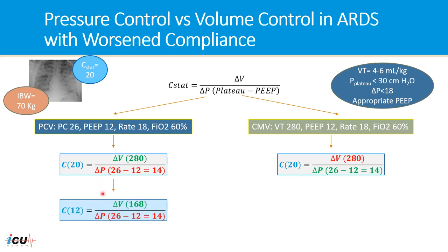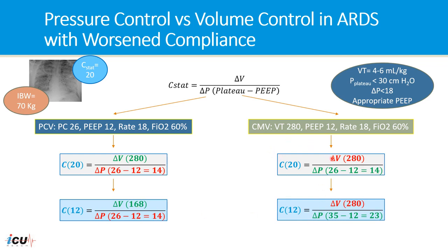In the first condition, if compliance worsened and decreased from 20 to 12, the pressure will remain the same as the controlled variable, and the tidal volume will change from 280 to 168. In volume control mode, if compliance decreases to 12, the volume will remain the same, but in order to deliver that volume, the pressure has to go up to 35 minus 12, giving a driving pressure of 23. In the first case, the patient will have hypoventilation with a tidal volume less than 4 ml per kg. In the second case, the patient will have a higher pressure than recommended by the protective lung strategy.